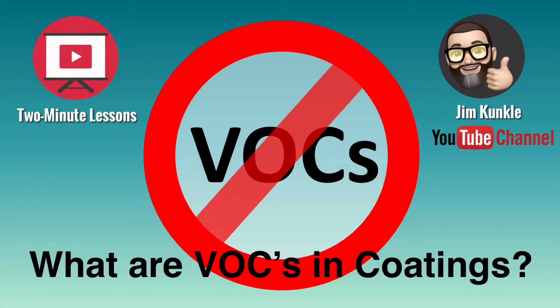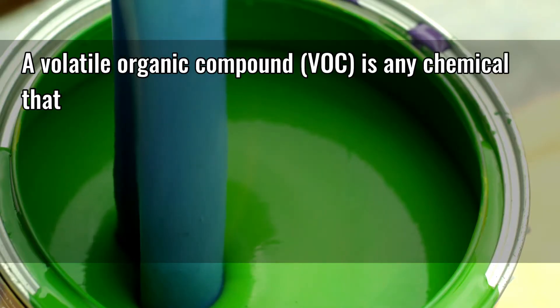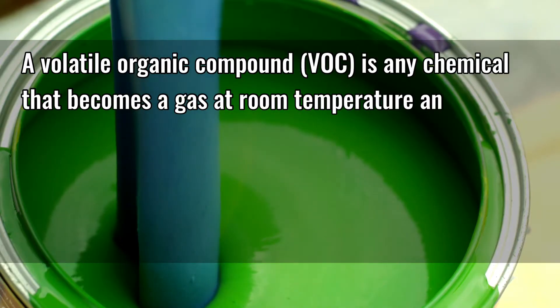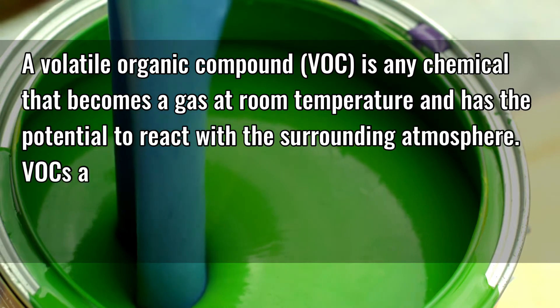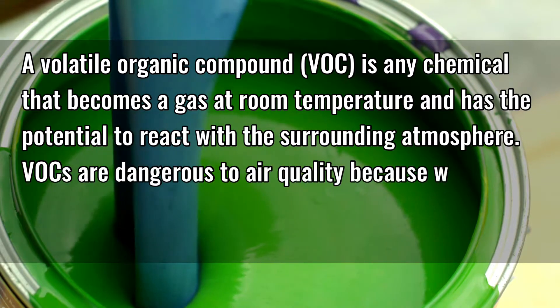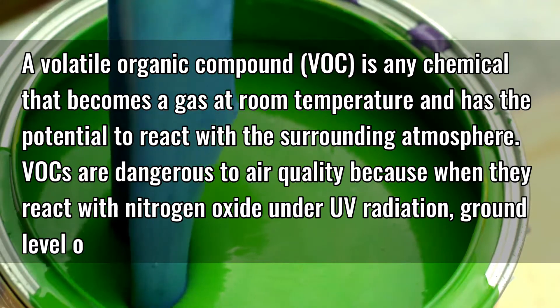Welcome to another two-minute lesson. Today's lesson is: what are volatile organic compounds in coatings? A volatile organic compound is any chemical that becomes a gas at room temperature and has the potential to react with the surrounding atmosphere.